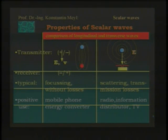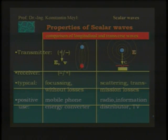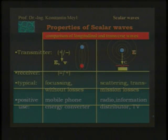We have a positive use for the transverse wave, as we know — radio, information distribution, TV. If there are millions of people listening to a transmitter, that is a positive use. But if I want to phone only with one person in the world, it's not necessary that millions of people listen to what I say. That means that for mobile phoning, the scalar wave would be the right one.